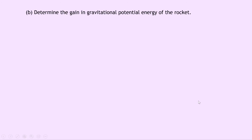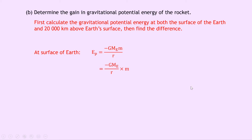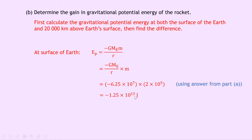Part B says to determine the gain in gravitational potential energy of the rocket. We need to calculate the gravitational potential energy at both the surface of the Earth and 20,000 kilometers above the surface, then find the difference. At the surface, EP equals minus GME times M over R, which we can write as minus GME over R times M. Substituting in numbers, we get minus 6.25 times 10 to the 7 — our answer from Part A — times 2 times 10 to the 5, giving minus 1.25 times 10 to the 13 joules.